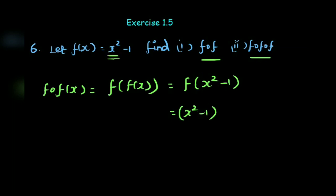If x is square, we square the whole thing. So minus 1 minus 1. Now we expand the square: x square squared is x to the fourth minus 2x square plus 1, then minus 1.